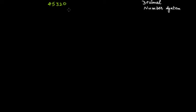So in a decimal number system, the first place is the units place, or the ones place. Each place has some value, and therefore the ones place has a value of one — it is called the ones place. We start from the right and move towards the left. The next place, moving left from the ones place, has a value of ten.